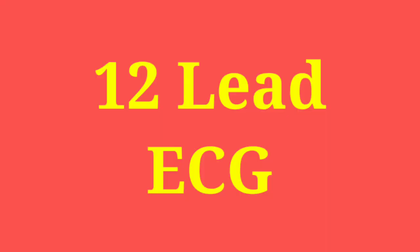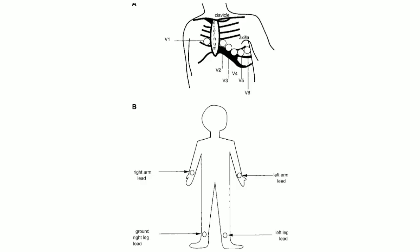Now let's talk about ECG leads. We use 10 physical electrodes placed on the patient, plus 2 virtual ones, making a 12-lead ECG. There are 4 limb leads, and a useful mnemonic to remember their colors and placement is 'Read Your Good Books' — R, Y, G, B.